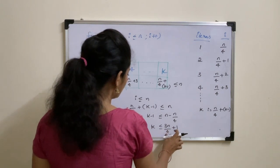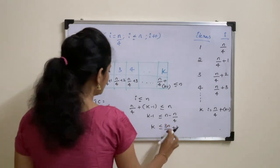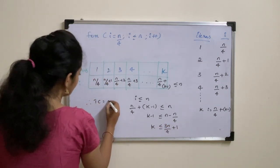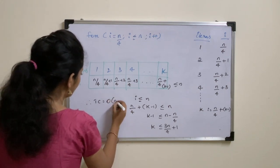So if you take upper bound of this, then you will get time complexity as, for 3N by 4, upper bound is N. So this can be written as theta of N.